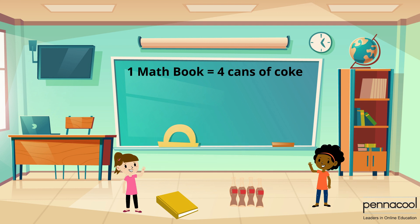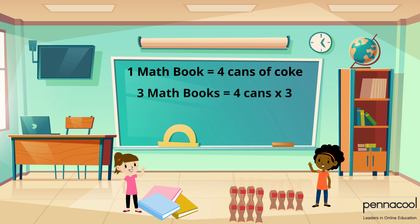This would mean that three textbooks would have a mass of four cans plus four cans plus four cans, which is equal to four cans multiplied by three, giving a total of 12 cans of Coca-Cola.